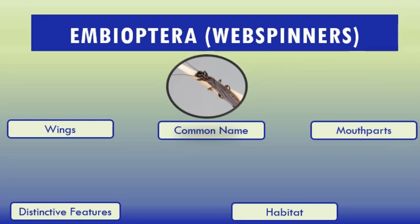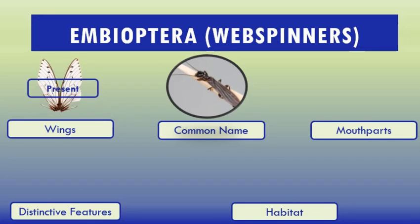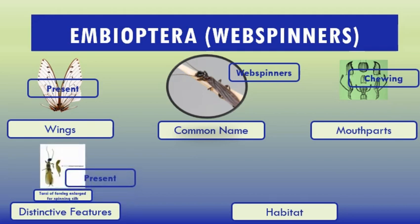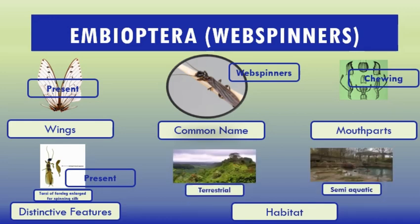Common characteristics of Embioptera web spinners: wings present, common name web spinners, mouthparts chewing. Distinctive feature: tarsi of front legs enlarged for spinning silk. You can see here the enlarged tarsi which secrete the silk, allowing them to make their webs and galleries to protect themselves from environmental conditions. Their habitat is terrestrial and semi-aquatic.